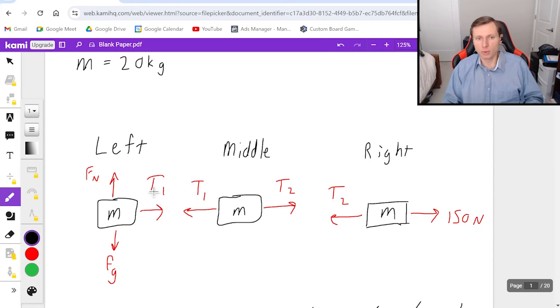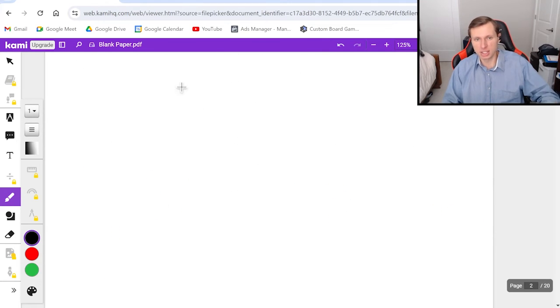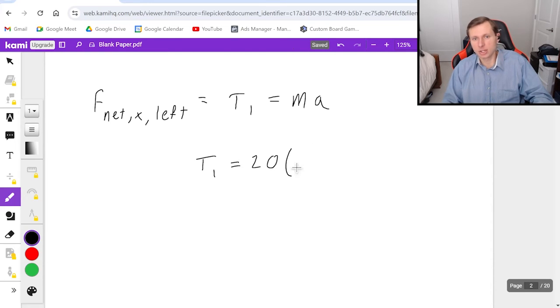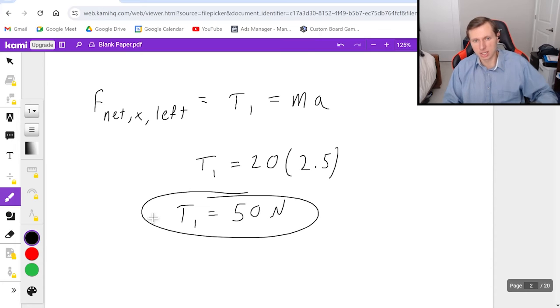So if I want to solve for T1, I'll do left. It's probably the easiest one. So F net x left is equal to all the forces to the right, T1, minus the forces to the left. There are no forces to the left, so don't write anything. And then that equals mass times acceleration. Now this time, the mass is just 20, because it's just the left box. It's not all of them. And the acceleration is still 2.5. Meaning T1 is going to be 20 times 2.5, we'll get 50 newtons.